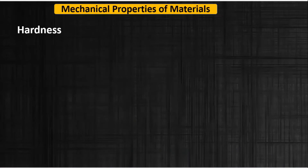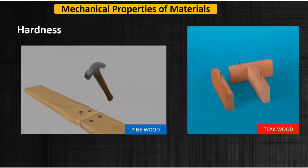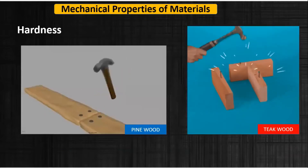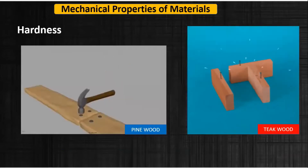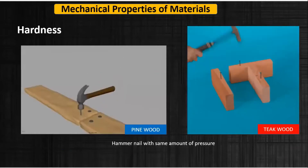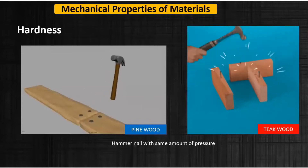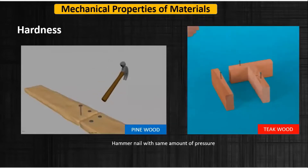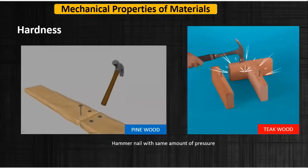Now let's understand hardness. Let's take an example of two different woods — one is pine wood and the other is teak wood. Now hammer a nail on both materials with the same force. We see that the nail is easily penetrated in pine wood, but in teak wood there is no penetration of the nail. This is because teak wood is harder than pine wood.